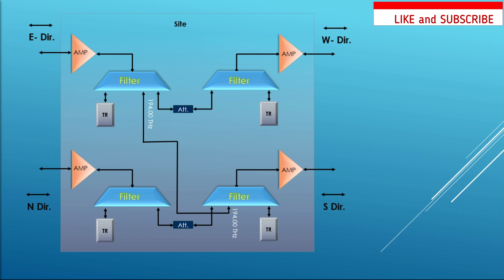But imagine that after some time, the customer says they want to send the signal to north instead of south — meaning the signal coming from east needs to be transmitted in the north direction. That means the direction needs to change. To do this, we need to visit the site and change the fiber from the south filter to the north filter.